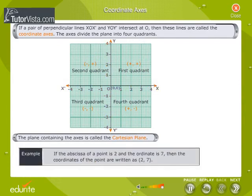Example: if the abscissa of a point is 2 and the ordinate is 7, then the coordinates of the point are written as (2, 7).